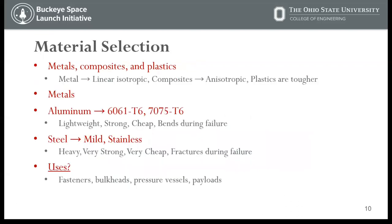Moving on to material selection. There are really three types of materials we're considering: metals, composites, and plastics. Metals, if you've taken a structures class, can be modeled as linear isotropic material — their properties are the same in every direction. Composites are anisotropic, meaning their material properties change based on direction — these materials have essentially grains in them. Plastics are a little tougher to characterize; they're usually homogenous but it really depends on how the plastic is manufactured.